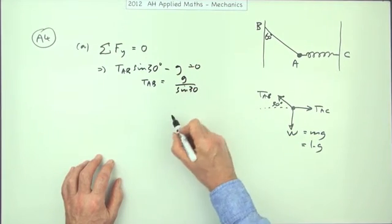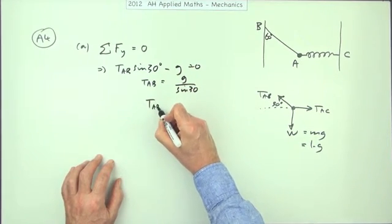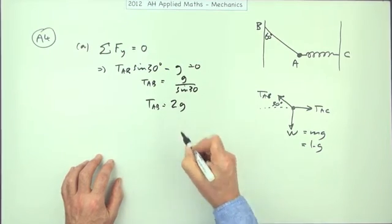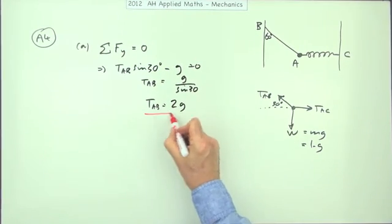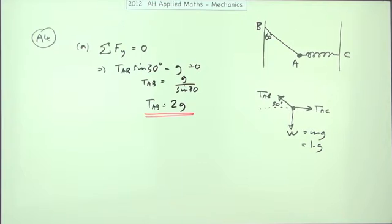Sine 30 is a half, so that means the tension in the string AB must be 2g. That's all it said. Show it was equal to that, rather than give it any numerical value for g.